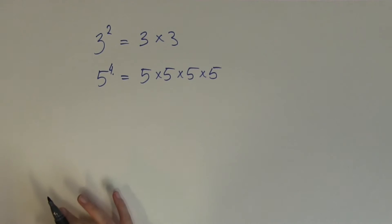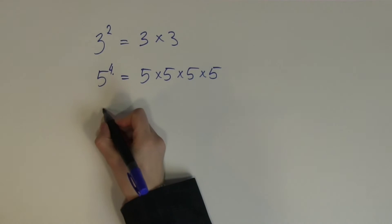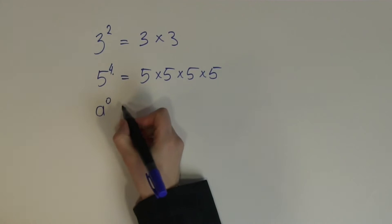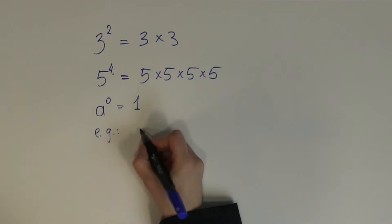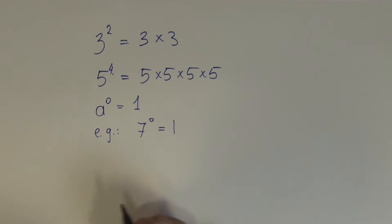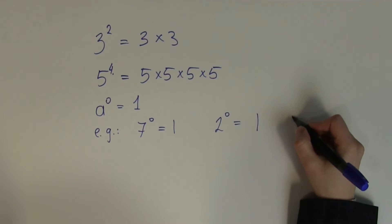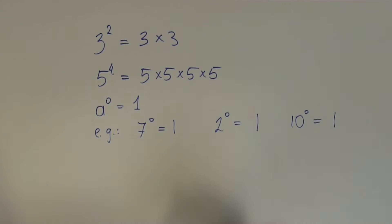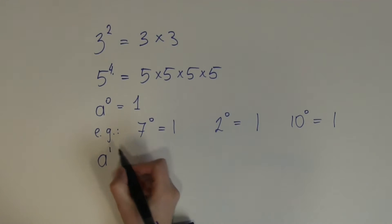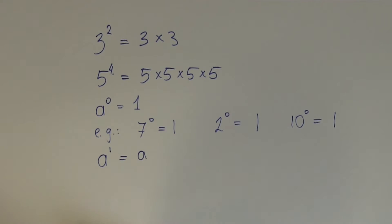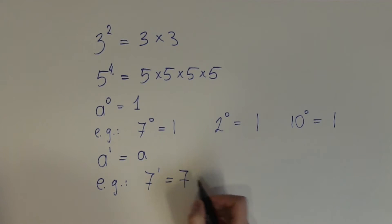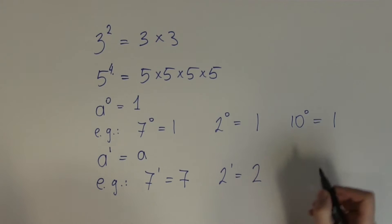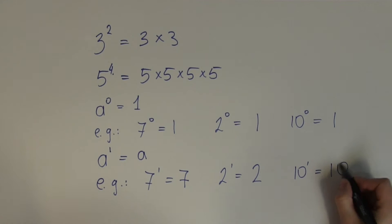Now there are two important powers to draw attention to. First, any number to the power of 0 is by definition always 1. For example, 7 to the power of 0 is 1, 2 to the power of 0 is 1, and 10 to the power of 0 is also 1. Another important rule is that any number raised to the 1st power is just the number itself. For example, 7 to the 1st power equals 7, 2 to the 1st power equals 2, and 10 to the 1st power equals 10.